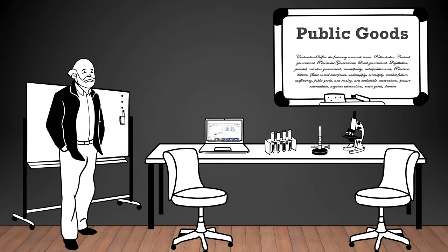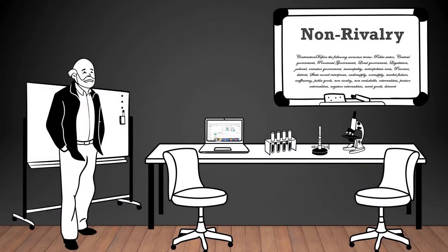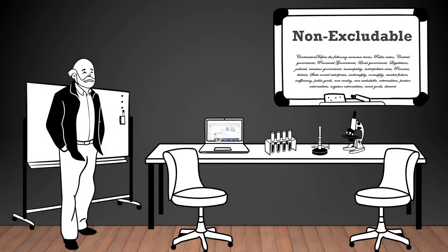Public goods: goods and services that are non-rivalrous, consumption by one individual does not reduce availability for others, and non-excludable, no one can be excluded from consuming the good. Non-rivalry: the characteristic of a good where one person's consumption does not reduce its availability for others. Non-excludable: the characteristic of a good where it is impossible to prevent people from using or consuming it, even if they don't pay for it.